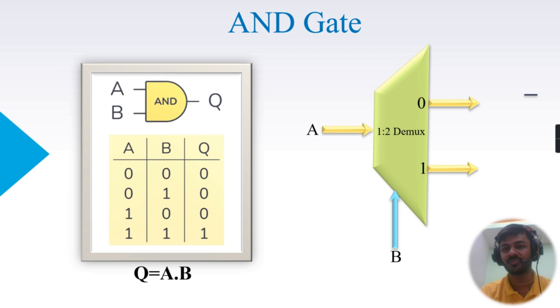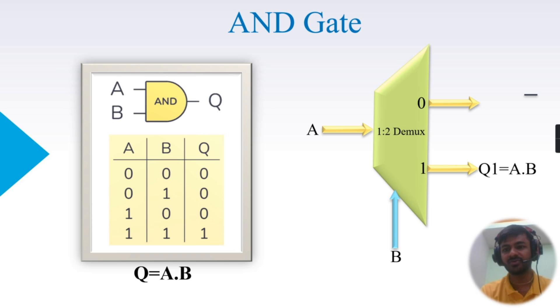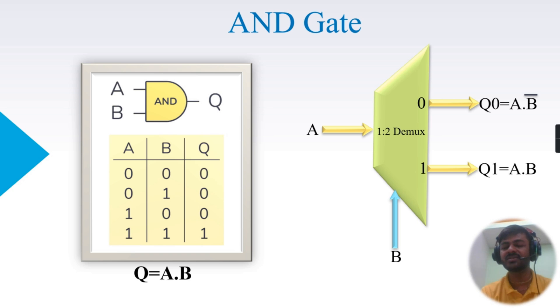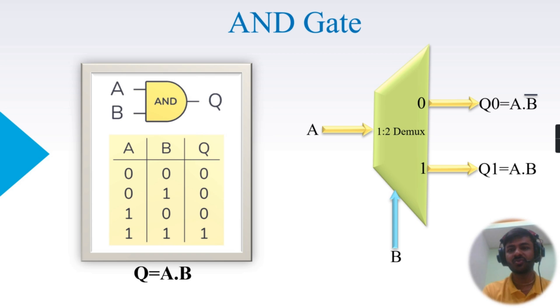Based on select line B, the input will be routed to the output. We have two outputs named Q1 and Q0. Q1 equals A AND B — when select line B is 1, A is routed to Q1, so the logical expression becomes A AND B. For Q0, when B is 0, it becomes B-bar, so the expression becomes A AND B-bar. We get A AND B from Q1 of the 1-to-2 demux — this is how the AND gate is implemented.